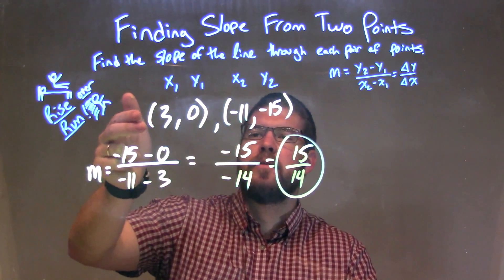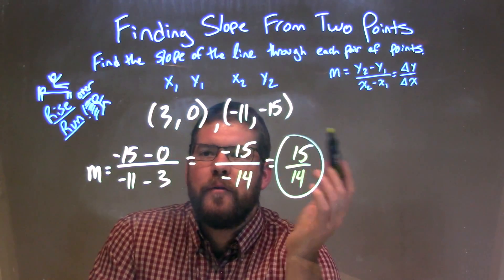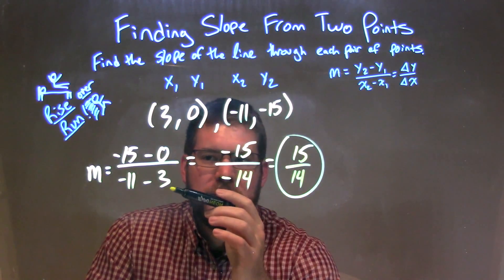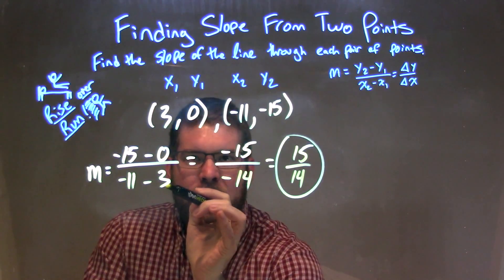So let's recap. We have our two points here: (3, 0) and (-11, -15). We follow our slope formula, change in y over change in x: y2 minus y1 over x2 minus x1.